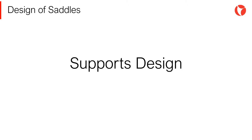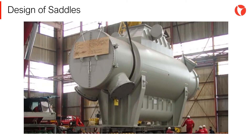There are different ways to support pressure vessels, depending on numerous factors: location, space available, process, operation, etc. The usual practice to support Shell and Tube heat exchangers is by means of two saddles.